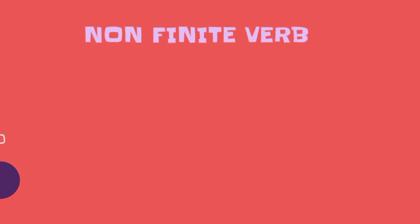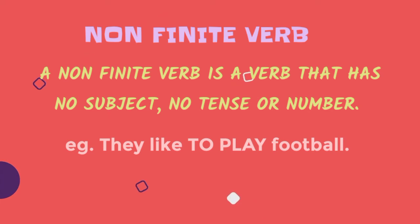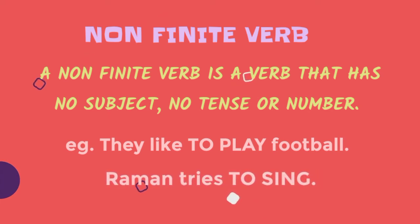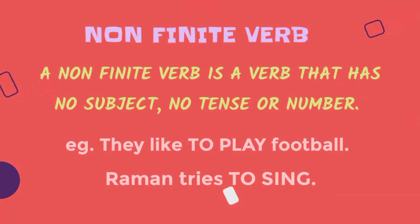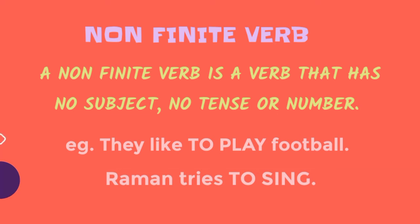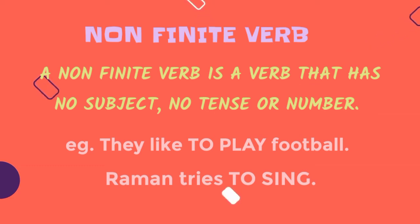Non-finite verb. A non-finite verb is a verb that has no subject, no tense, and no number. Jhin verbs mein na toh subject, na tense aur number kuch bhi nahi hota, unnei hum non-finite verbs kehte hain. For example, they like to play football — to play is a non-finite verb, as it is not clear who the subject is, when it was done, and the number is also not clear. Raman tries to sing — to sing is also a non-finite verb as nothing is clear as to subject, tense, aur number.